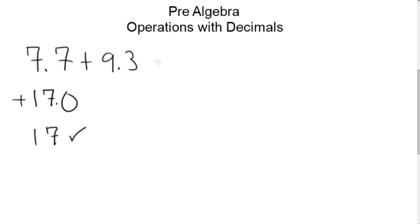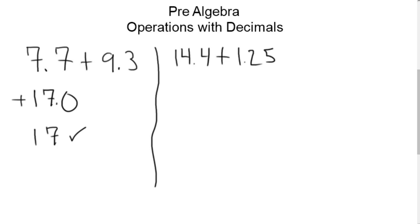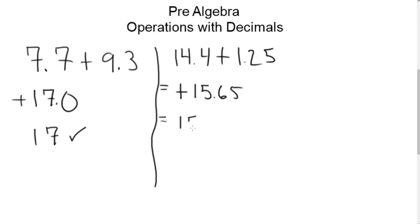Let's look at another example — you try this one. Let's take 14.4 plus 1.25. Feel free to pause the video and try it yourself. The process you should go through: I have two numbers of the same sign, so I add the absolute value and bring down the common sign. That gives me a positive, and adding the absolute values gives me 15.65. Dropping the plus sign, the answer is just 15.65.